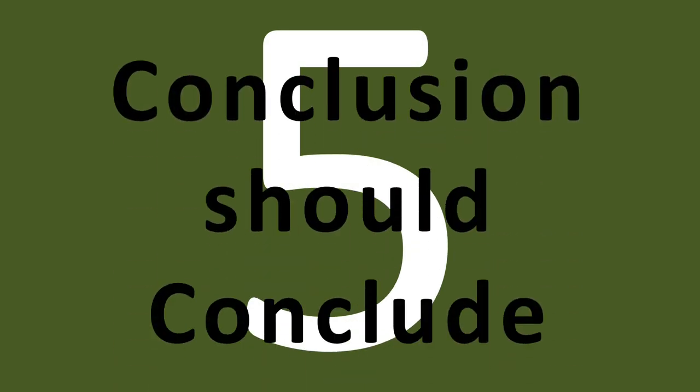Tip number five: conclude in your conclusion. Your essay shouldn't just stop when it reaches the end — it should conclude. That means you need to underline for the reader the key takeaway points you want them to leave your essay with. Summarise what you've said without repeating every detail, don't introduce new information, and explain how you've done the things you promised to do back in the introduction. That will make your whole essay hang together as a single coherent piece of work.